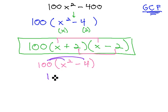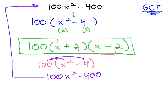Distribute the 100 through, and we get 100x squared minus 400, which is the original problem we started with. This tells us that our answer of 100 times x plus 2 times x minus 2 is the correct solution.